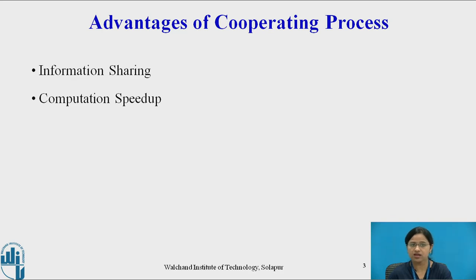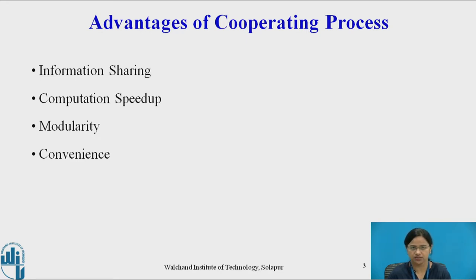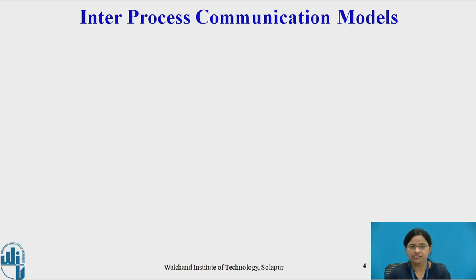Communication between processes allows us to get results from subtasks and achieve computation speedup. Modularity is another advantage — we want to design a system in a modular fashion. Cooperating processes allow designing a system in a modular fashion, making it more convenient for users and allowing different types of information to be shared. For cooperating processes, an inter-process communication model is required, which allows cooperating processes to exchange information with each other.